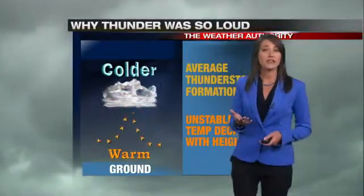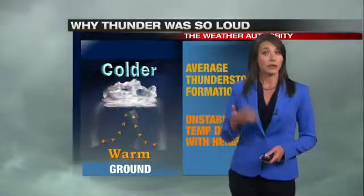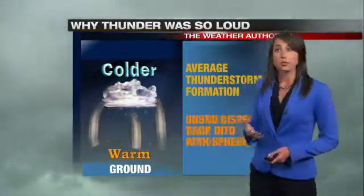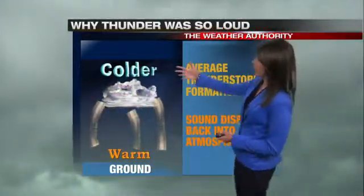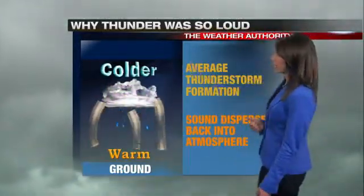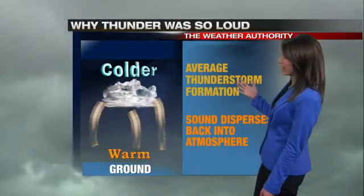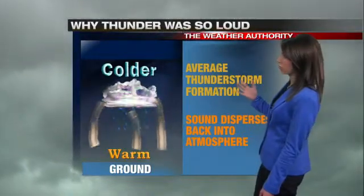And if you have enough instability, that cloud produces a storm. You have that colder air up in the atmosphere, which creates an unstable atmosphere. That's how your average thunderstorm forms.